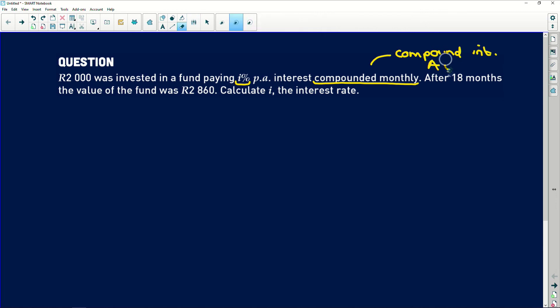A equals—check that out, compound interest. A equals P times (1 plus I over M) to the power of N times M, where M is how many compoundings there are per year. Just immediately you see compounded, it's compound interest.